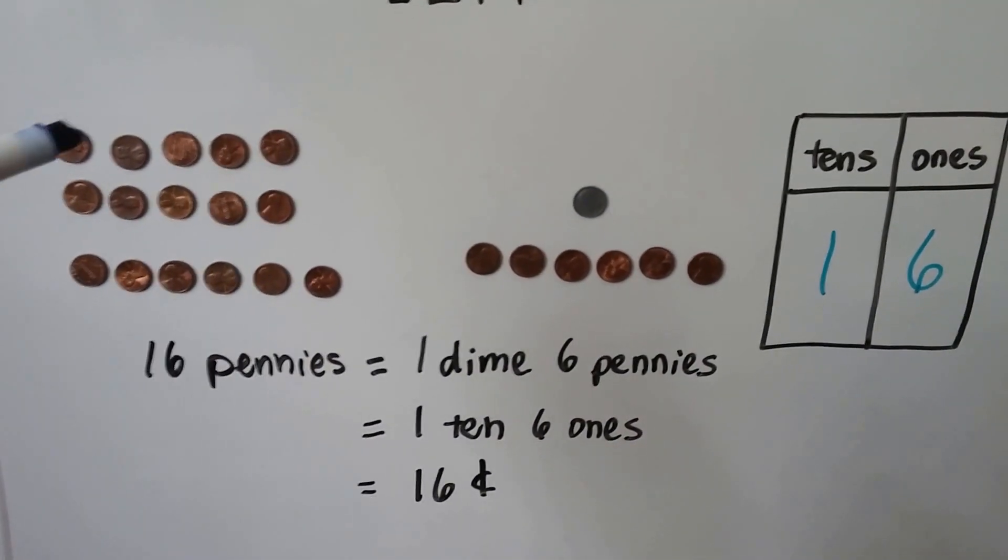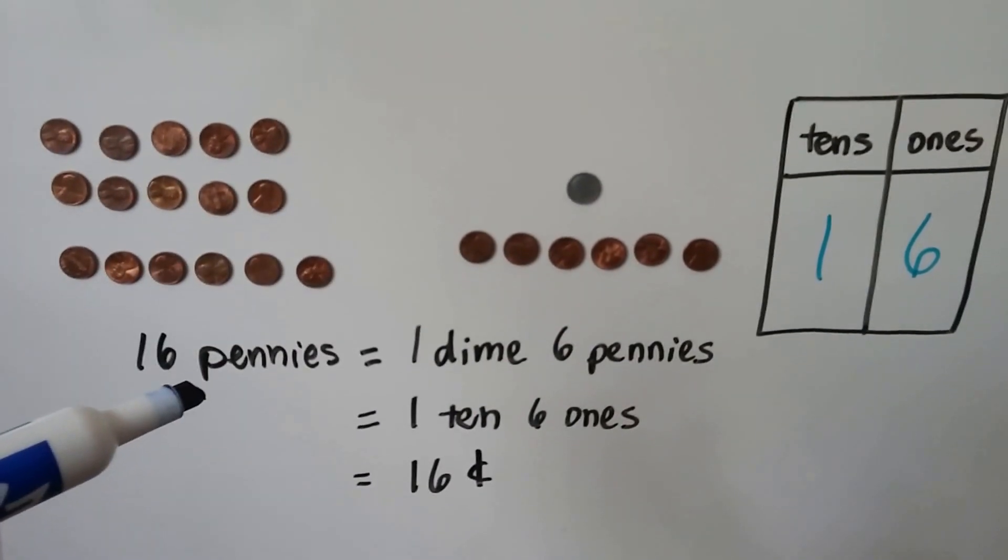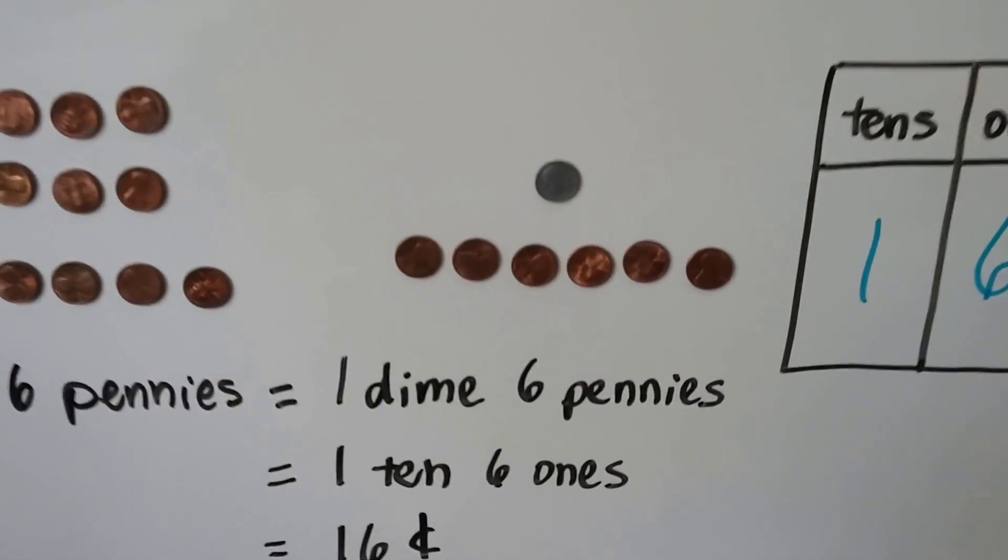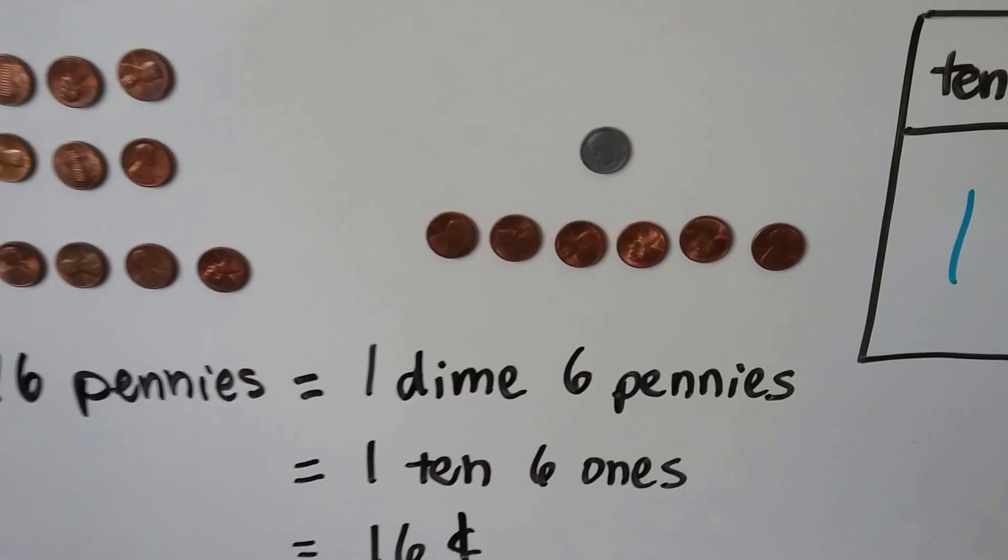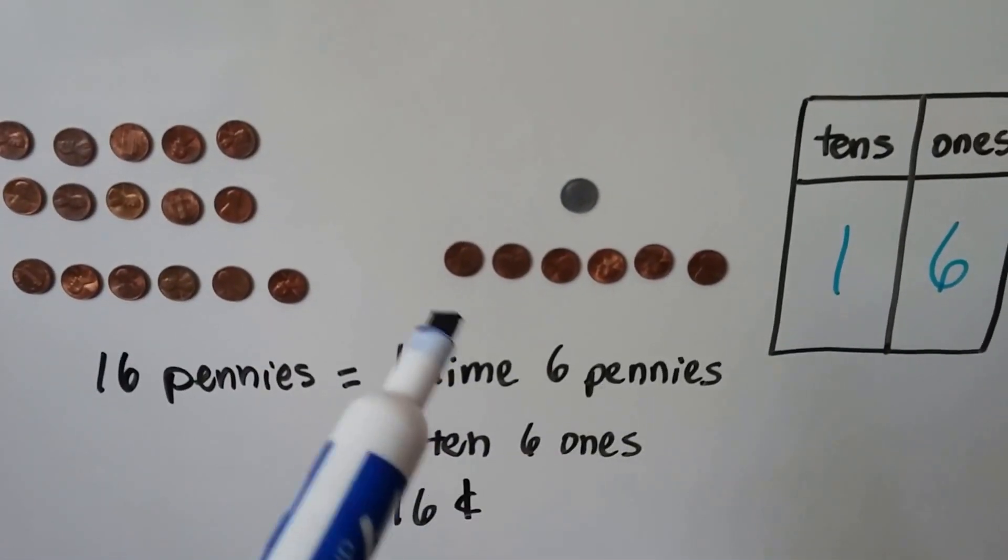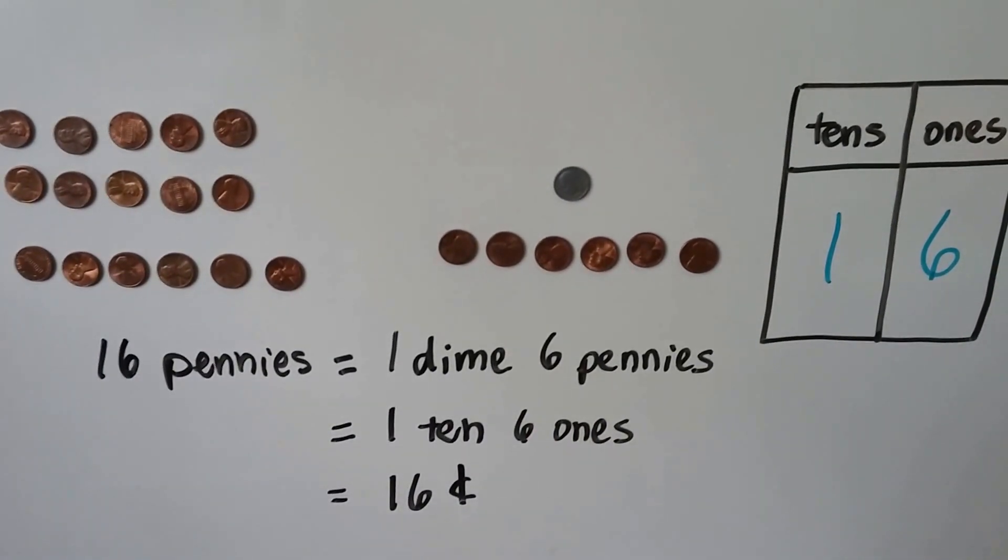Here we have 10, 11, 12, 13, 14, 15, 16 pennies, and it's equal to one dime and six pennies. That's one ten and six ones. That would be 16 cents.